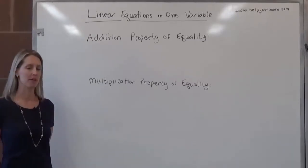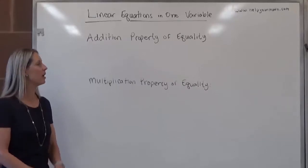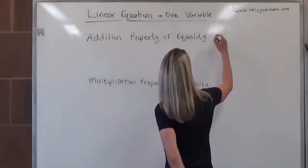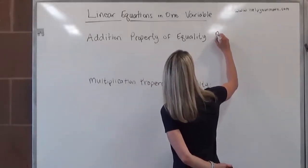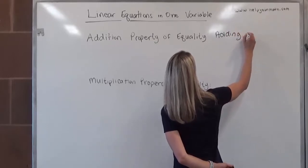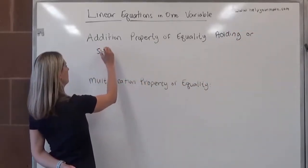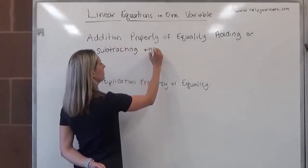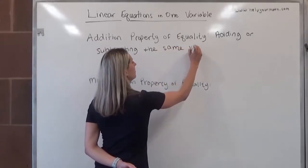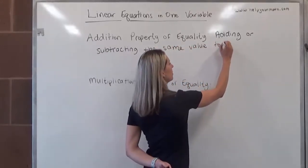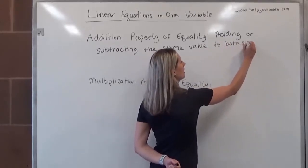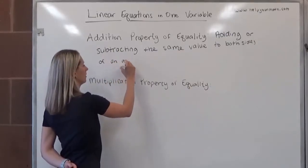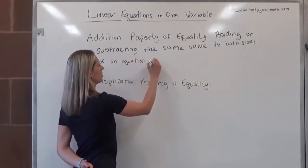The first one is the addition property of equality. The addition property of equality states that if we add the same value to both sides, it will not change the equality. So the addition property of equality: adding or subtracting the same value to both sides of an equation will not change the equality.